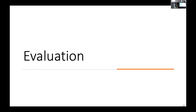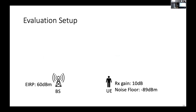Now let's look at our initial evaluation results. We conducted our simulation based on a common outdoor scenario setup, where you have a remote base station with an EIRP of 60 dBm, a user device with a receiving antenna gain of 10 dB and a noise figure of negative 89 dBm. Our GIGSky system relays the signal from the ground base station to the user using a single frequency channel of 100 MHz.